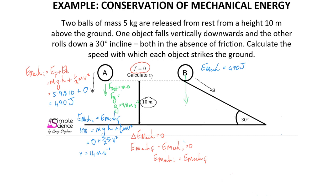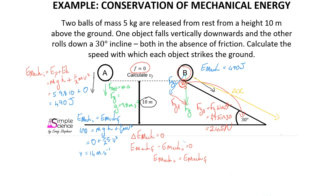For object B on the incline, that is slightly more complicated. Although gravity pulls this object downward, that force of gravity is resolved into two components: F_g perpendicular and F_g parallel. The parallel component is F_g times sin(theta), which is 5 times 9.8 times sin(30°), giving only 24.5 newtons down the slope. So the net force on object B is far smaller than on object A, but the displacement of object B is far greater, meaning the acceleration acts over a longer period of time.